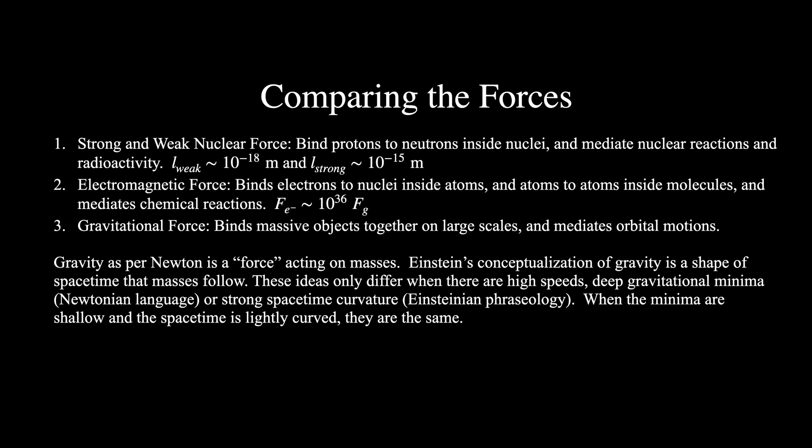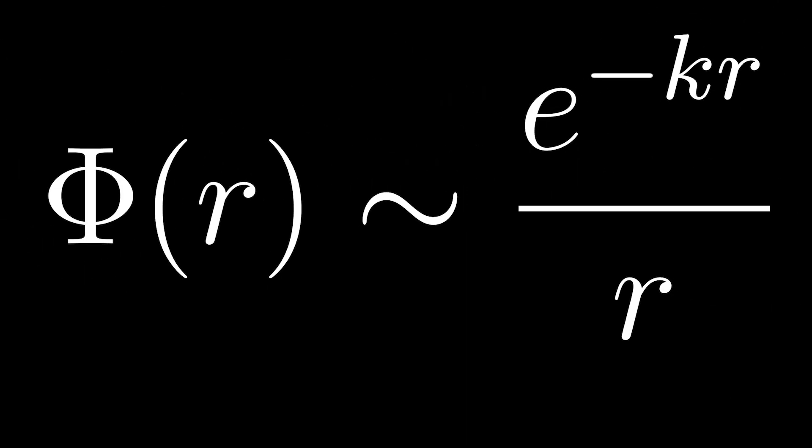In contrast, the weak nuclear force is what's called a Yukawa-type force. This kind of force is characterized by a potential of the form of inverse r times the exponential of, say, minus kr, where k is some constant.